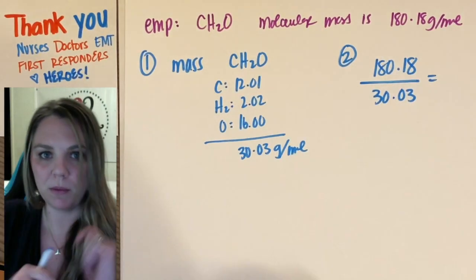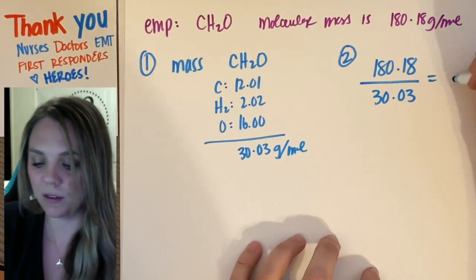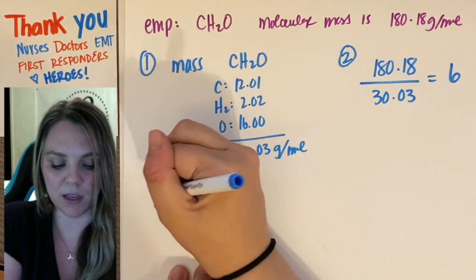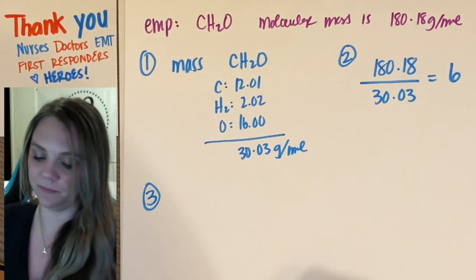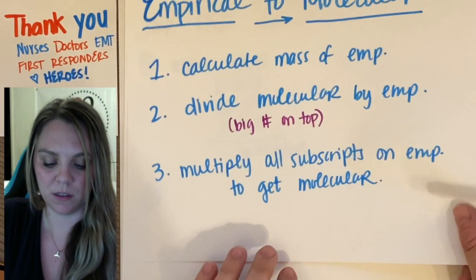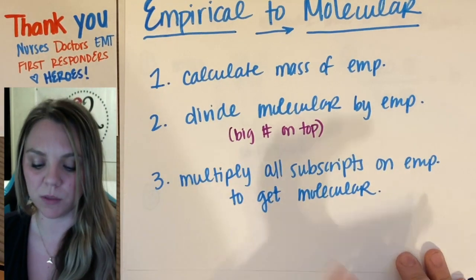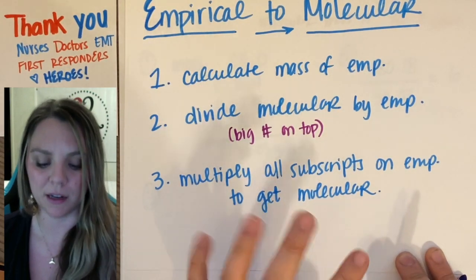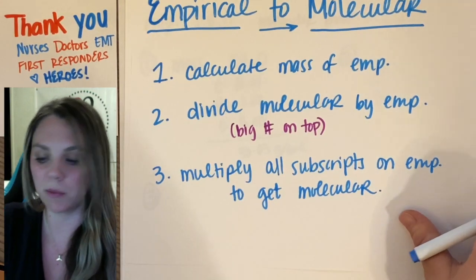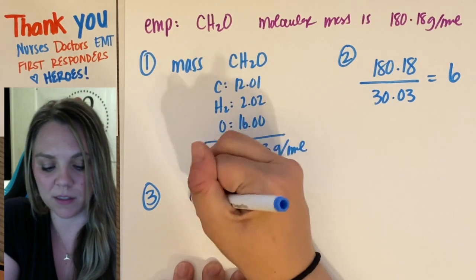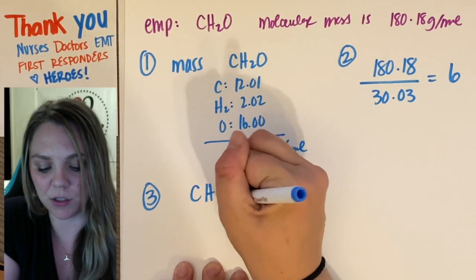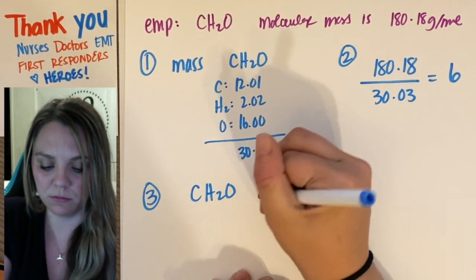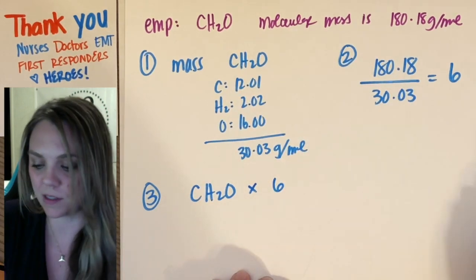And I get — beep boop in my calculator — six. So now step three: it's going to be really easy. You just multiply all the subscripts on your empirical formula by that number to get the molecular formula. So I started with CH2O, and now I need to multiply all those subscripts by six.